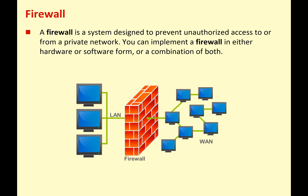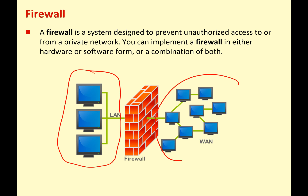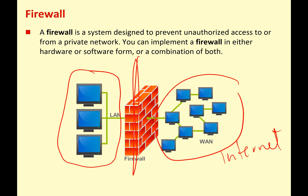Firewall software — a firewall is a system designed to prevent unauthorized access to or from a private network. You can implement a firewall in hardware, software, or a combination of both. Imagine your home, school, or work network connected to a wider area network like the internet. A firewall sits between your network and the internet, monitoring all incoming and outgoing traffic like a security guard — only authorized access is granted, and it also prevents bad software sending data out to the wider network.